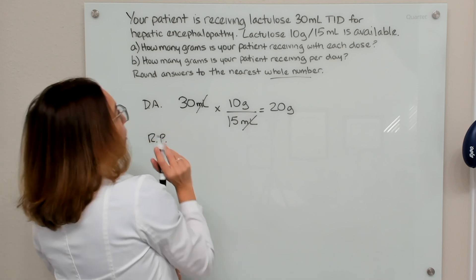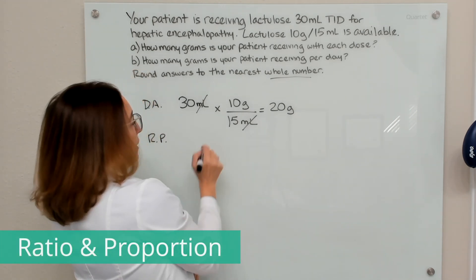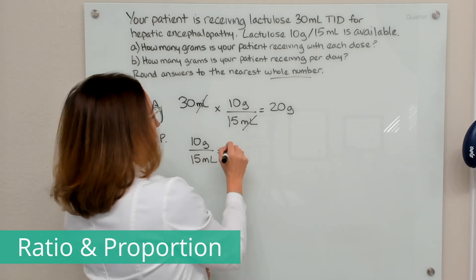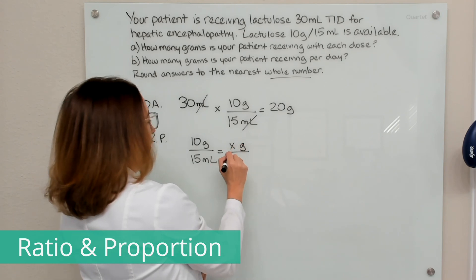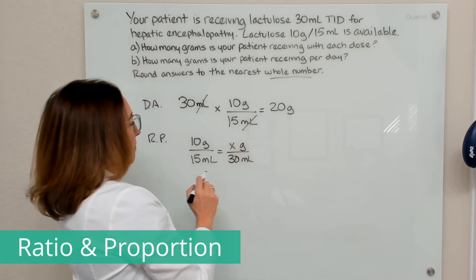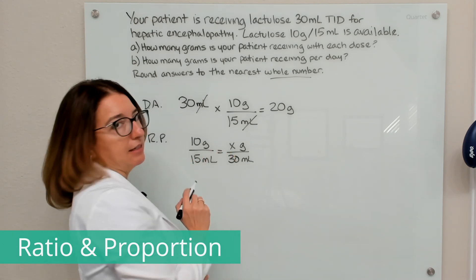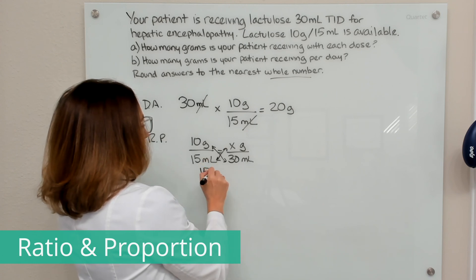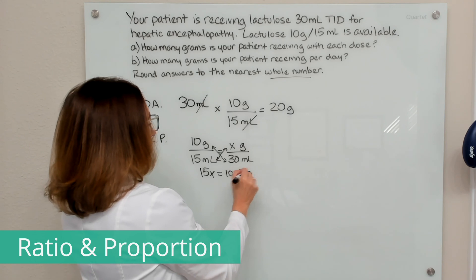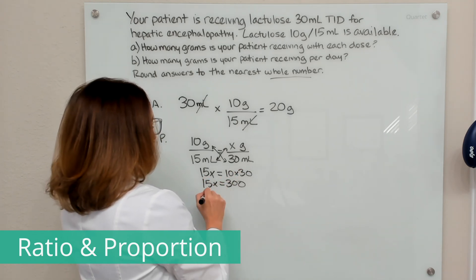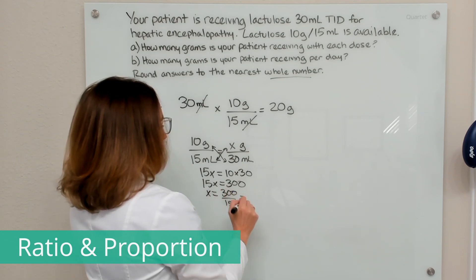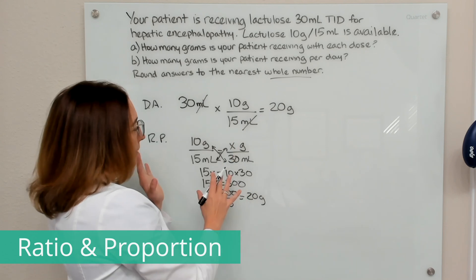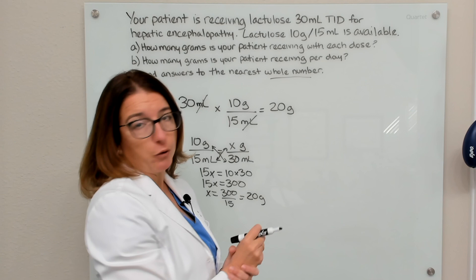Now let's solve the same problem with ratio and proportion. I put my known ratio — 10 grams in 15 ml — and then set up 30 milliliters the patient is receiving against x grams as the unknown. Cross-multiplying gives 15x equals 10 times 30, so 15x equals 300, and x equals 300 divided by 15, which equals 20 grams — the same answer. Ratio and proportion has a few more steps, but offers flexibility in how you set up the ratios.